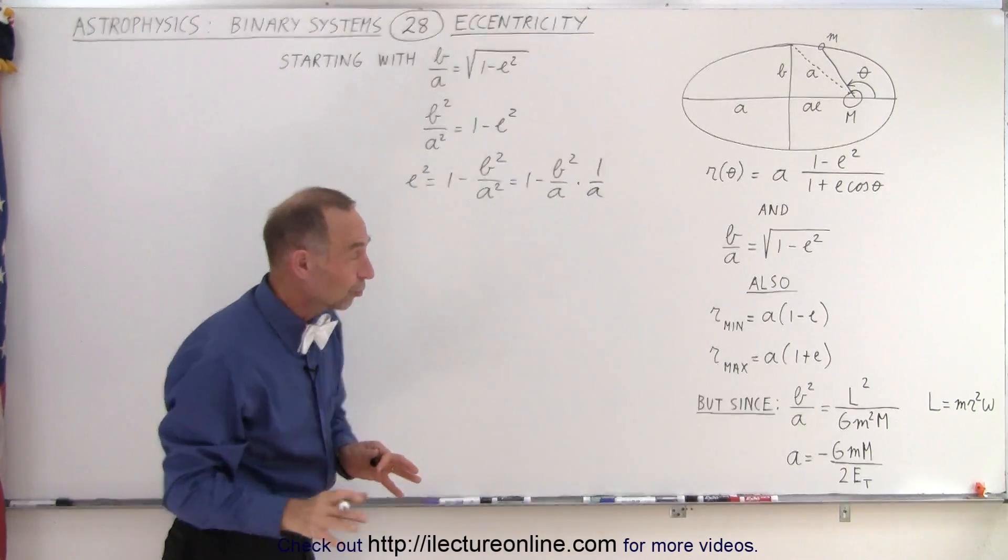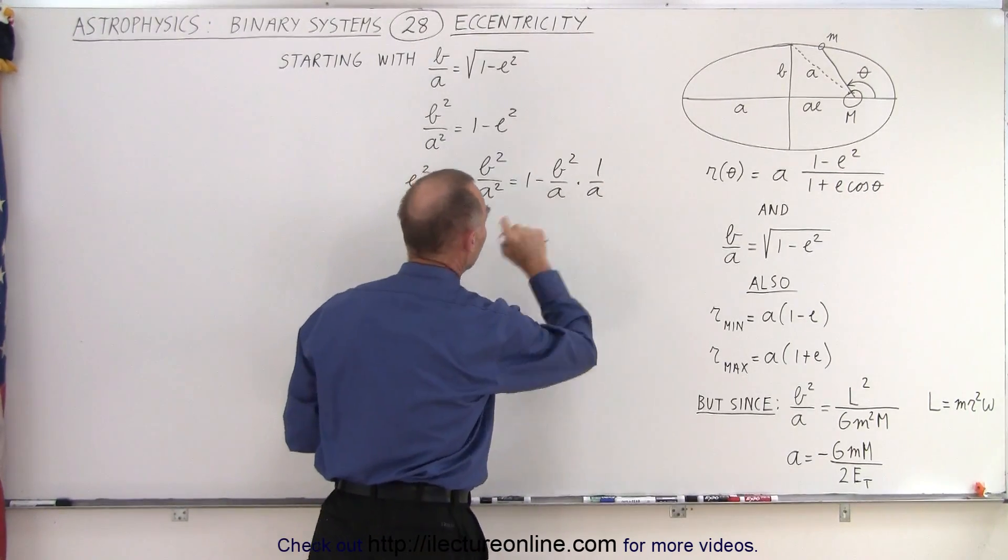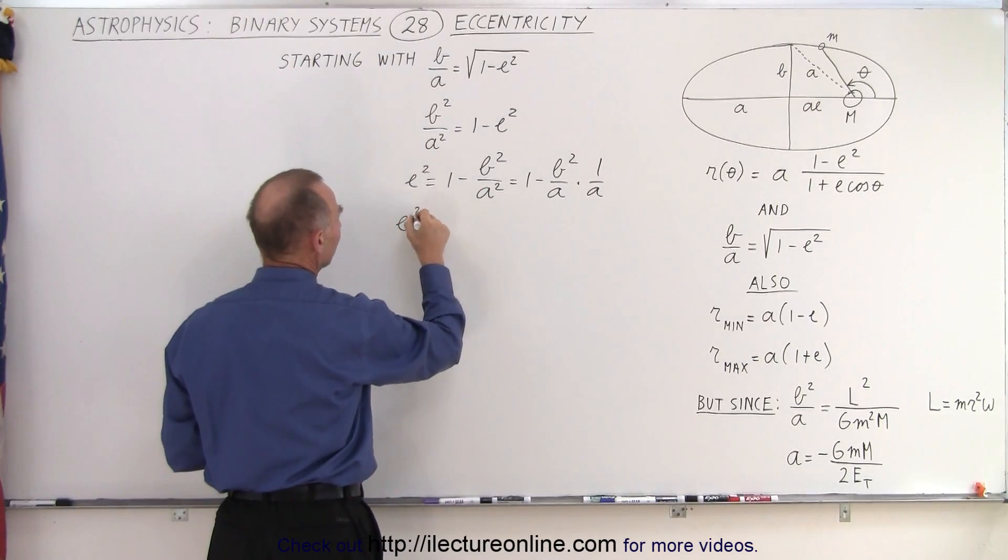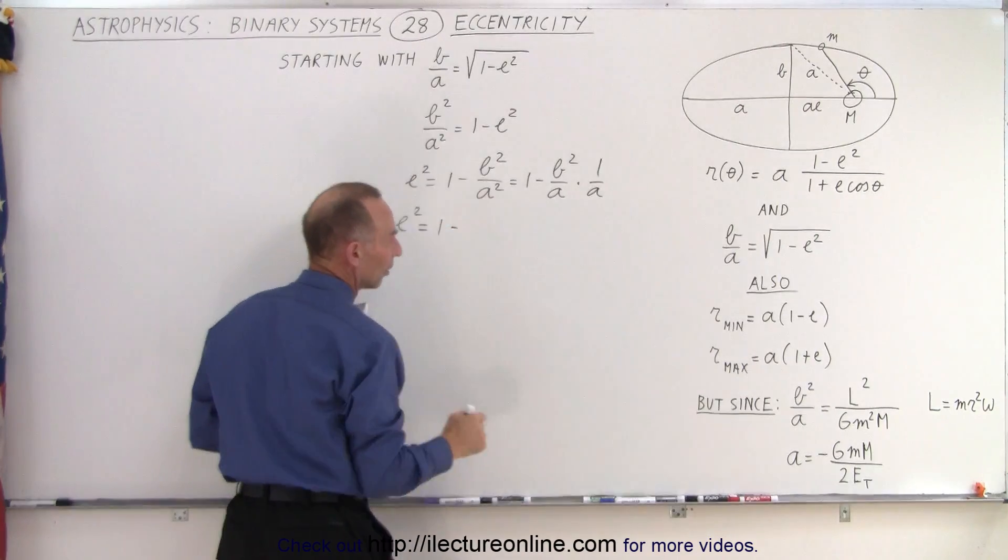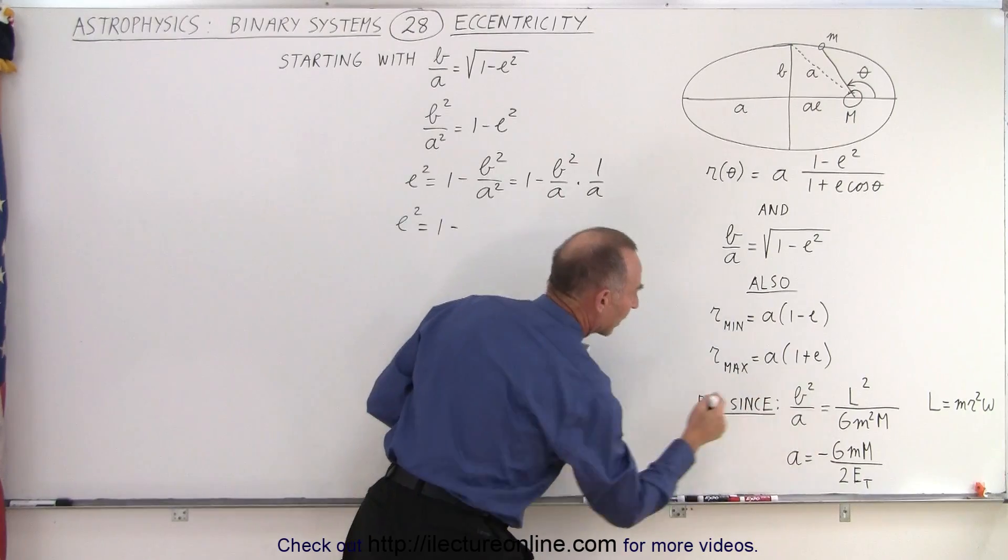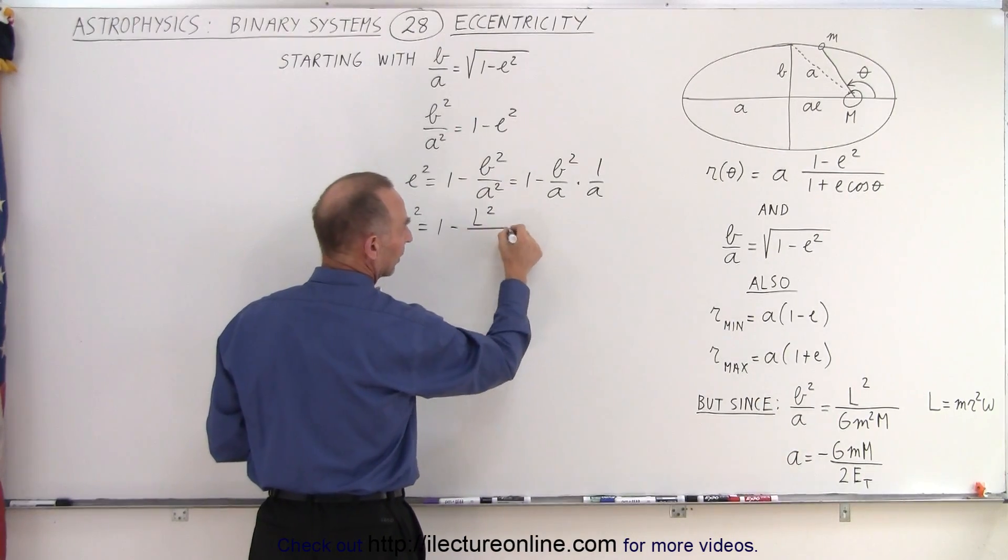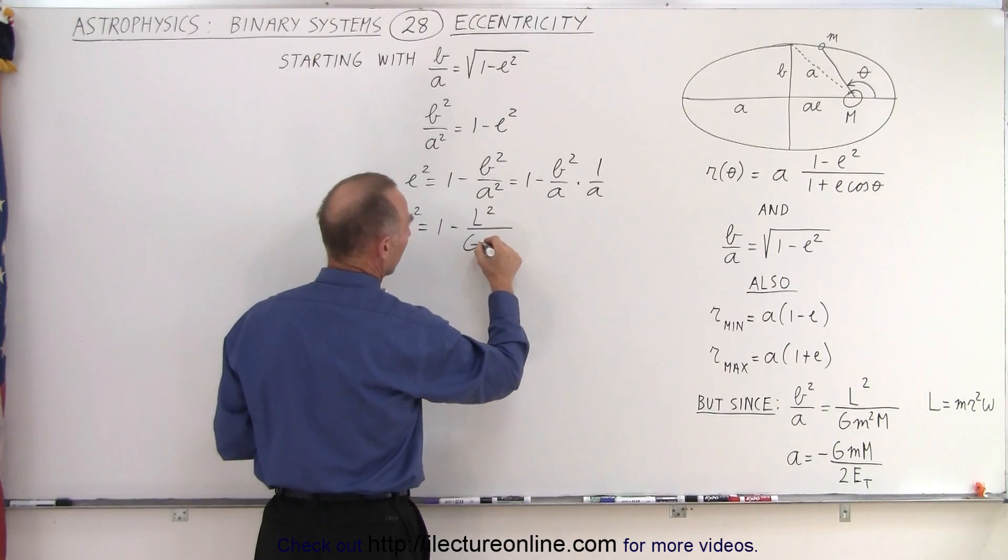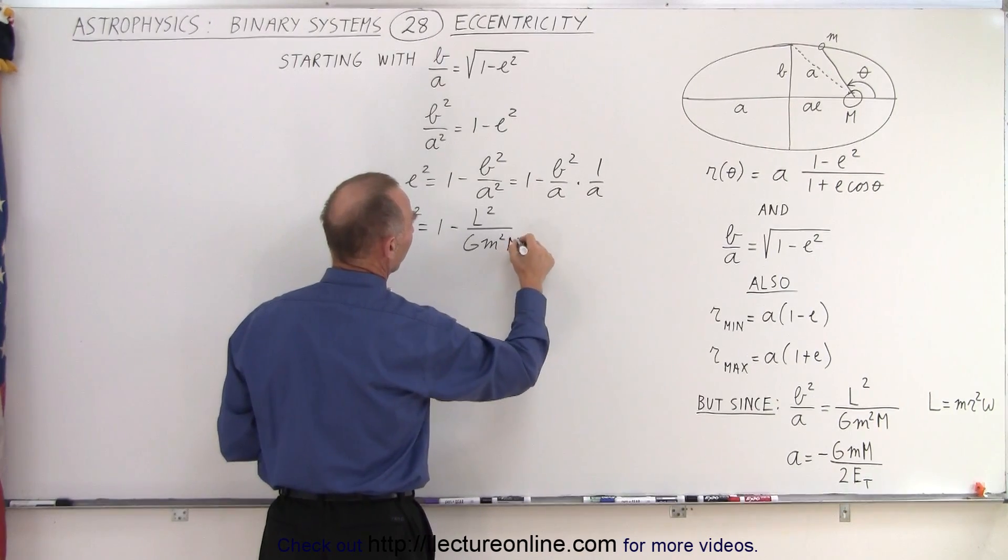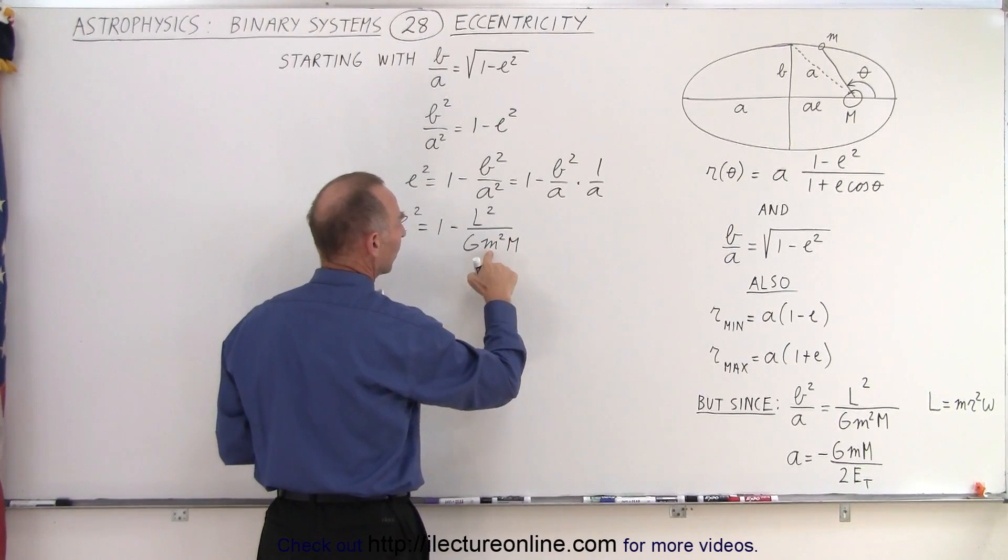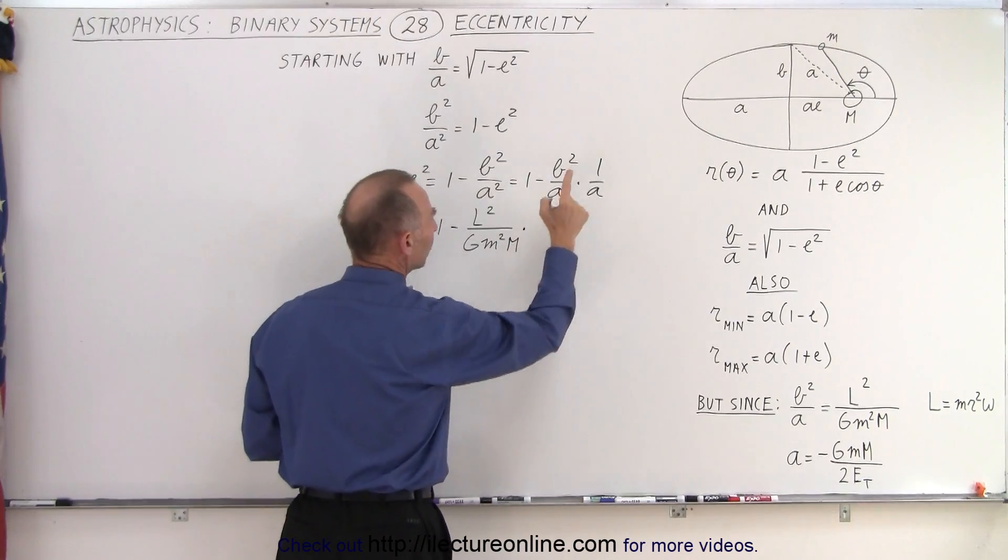And now we're going to substitute what these two fractions are equal to. So now we have e squared is equal to 1 minus, so b squared is defined right here. So that is equal to L squared divided by G small m squared big M. So that's the mass of the planet, the mass of the sun, times 1 over A.